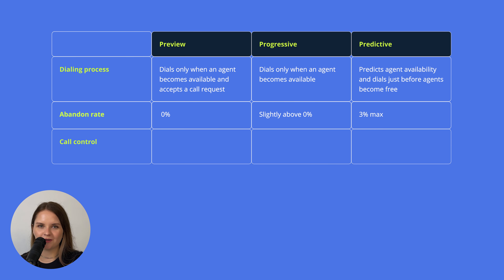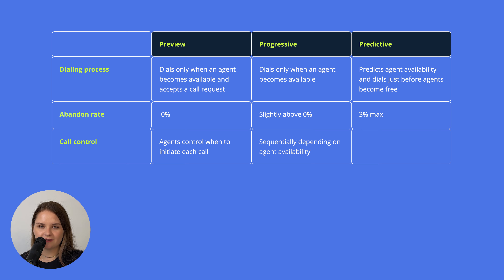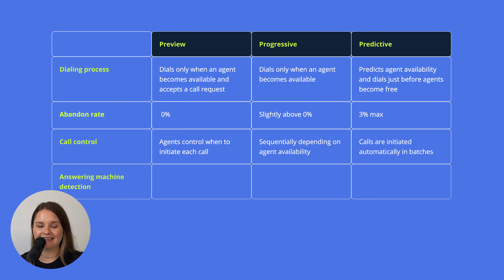Call control: with Preview, agents control when to initiate each call. With Progressive, calls are initiated sequentially depending on agent availability. And with the Predictive mode, calls are initiated automatically in batches.